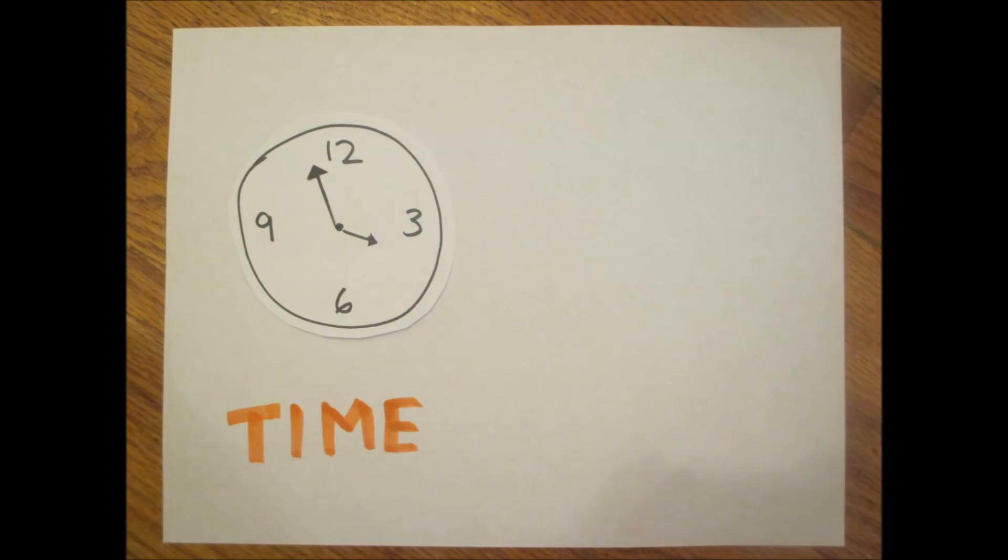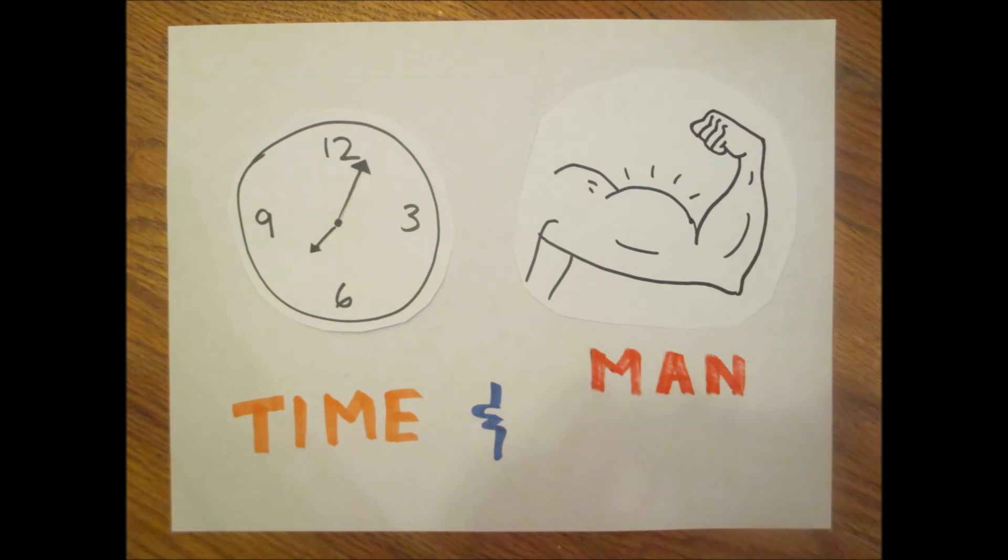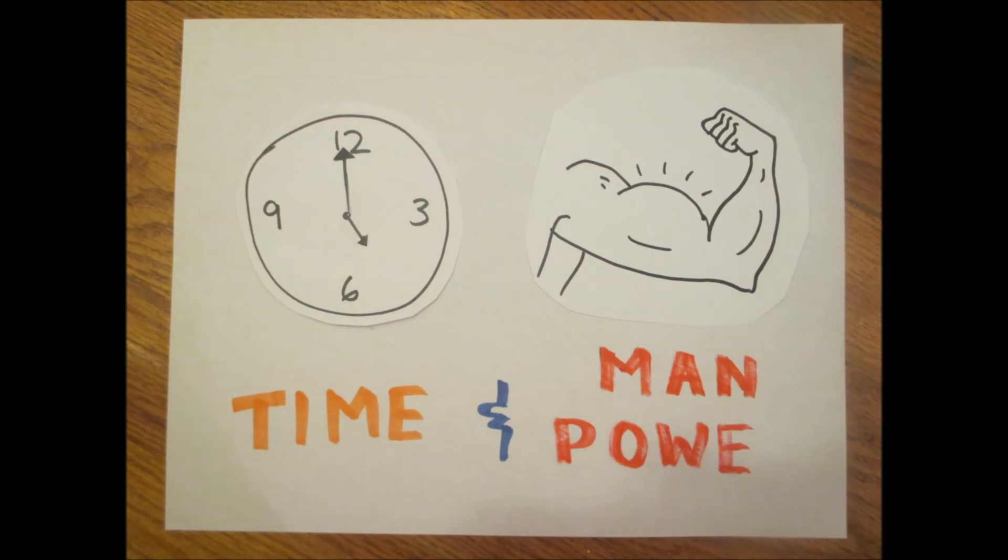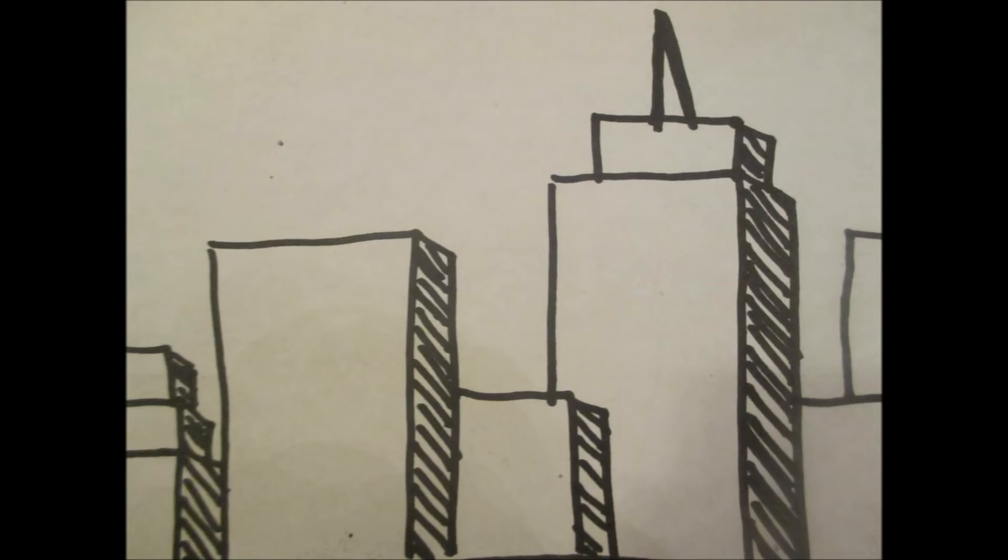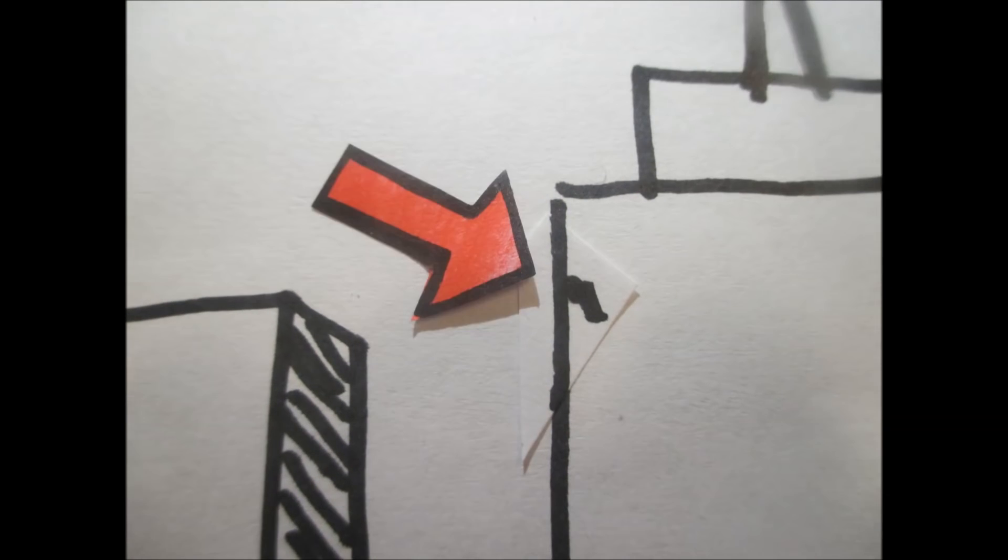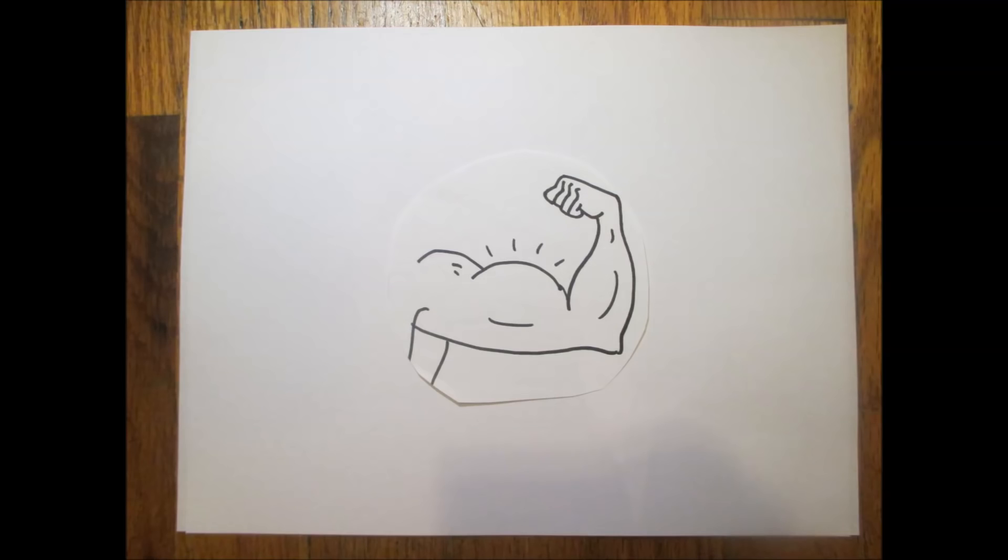Traditional inspections take time and manpower, and you have to identify where damage is before you can repair it. What if you could tell directly where the problem is? What if it didn't take any manpower at all?